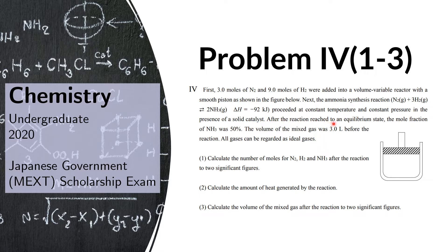After the reaction reached an equilibrium state, the mole fraction of ammonia was 50%. The volume of the mixed gas was 3.0 liters before the reaction, and all gases can be regarded as ideal gases.